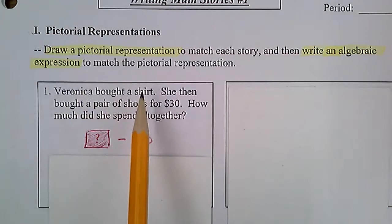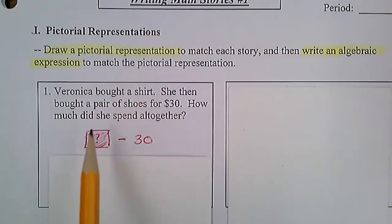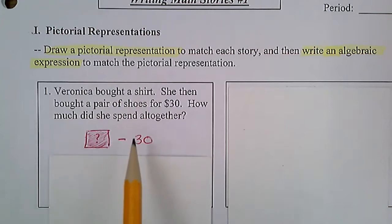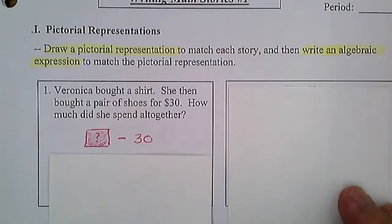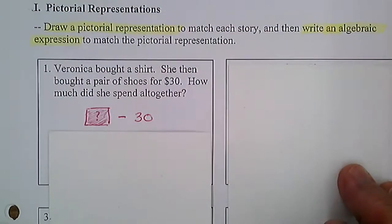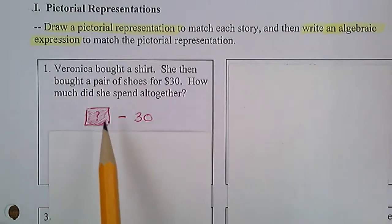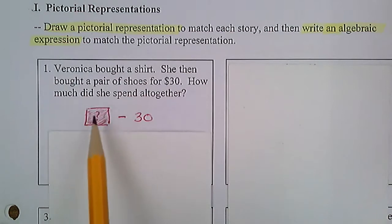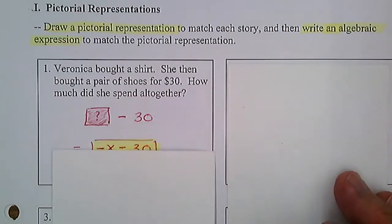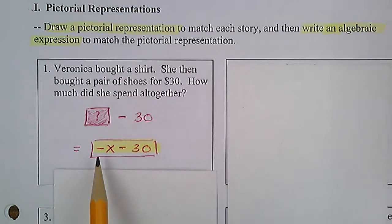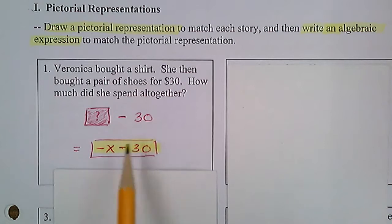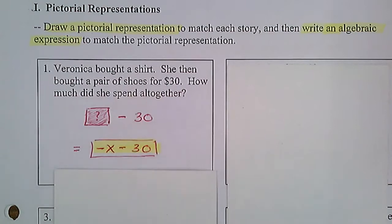She's buying a shirt — money is being taken out of her account, and we don't know how much. Here's our pictorial representation. Now we want to change that to an algebraic expression. If this is an unknown, we use a variable, and since she's spending that money, the variable is negative. So this would be negative x, and then minus 30 — she spent 30 more dollars on a pair of shoes. So the expression is negative x minus 30.